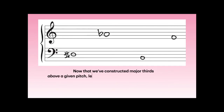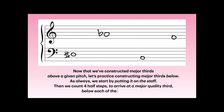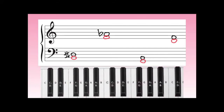Now that we've constructed major thirds above a given pitch, let's practice constructing major thirds below. As always, we start by putting it on the staff, then count four half-steps to arrive at a major quality third below each of the given pitches. Starting on a D-sharp and moving down four half-steps to some kind of B: one, two, three, four — we land on a B key. B is the correct answer; B is a major third below D-sharp.